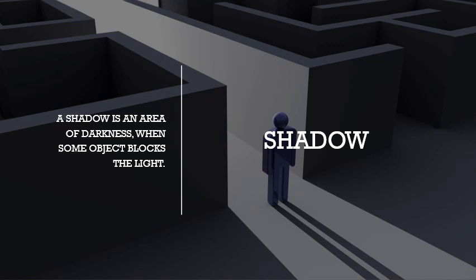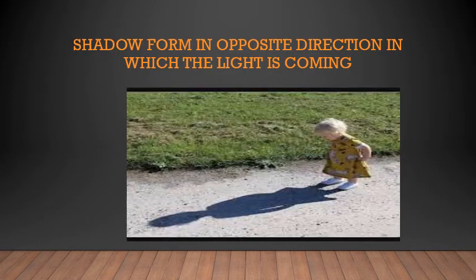If you go out in the sun, you can see that somebody like you is walking with you. What is that? That is nothing but your shadow because of the sunlight. It is black in color. Shadow forms in the opposite direction from which the light is coming. The child is standing and the light is coming from the top, so the shadow is formed below on the ground. That is how the shadow works.